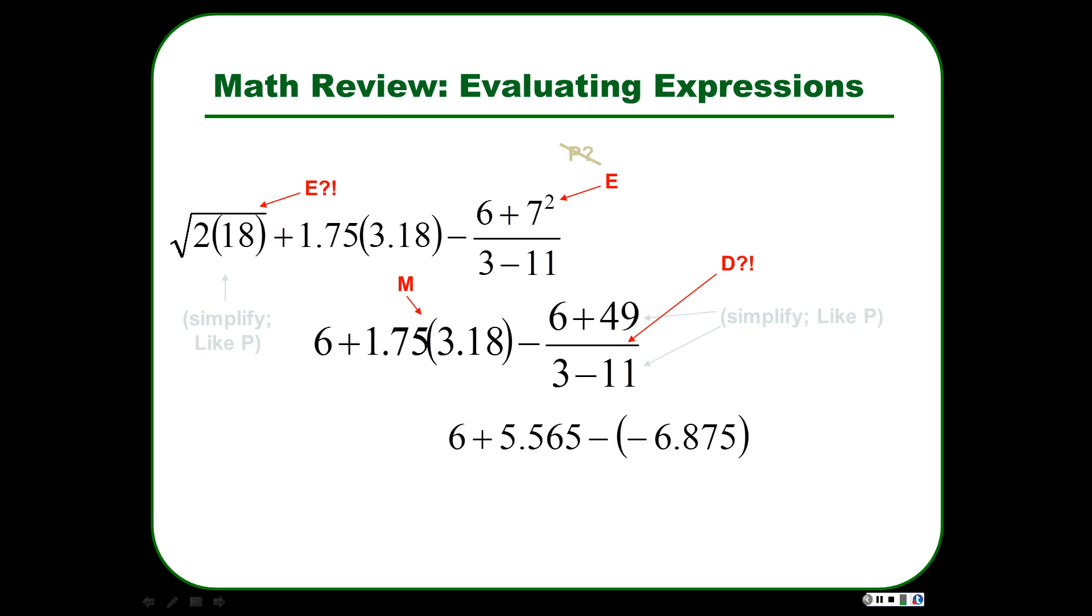And you divide all that stuff, and you end up with negative 6.875. But it's minus that, so it's minus negative 6.875. And 1.75 times 318 equals this big number, or small number, 5.565. And so then we have addition and subtraction. But you remember minus a negative is the same as plus a positive. So when we're done, the answer is 18.44.